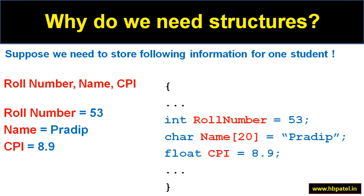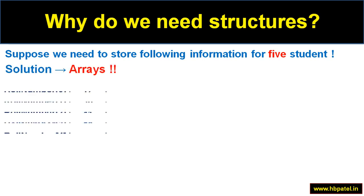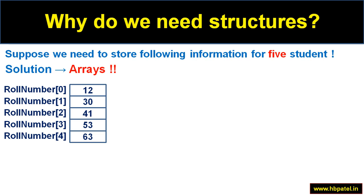I can have three different variables: an integer roll number storing 53, a character array for the name Pradeep (as we saw in the array chapter on strings), and a float CPI storing 8.9. So far this is good, but what if I want to store five, ten, or a hundred students' information? The solution we have seen in our array videos is to use arrays — so I can have three different arrays, the first being a roll number array with five elements.